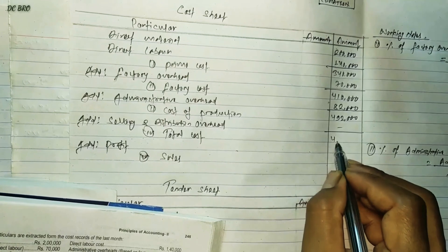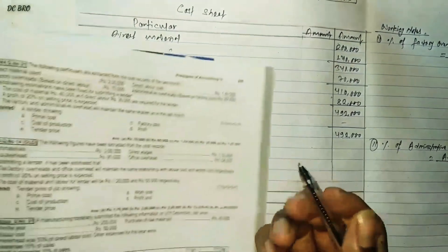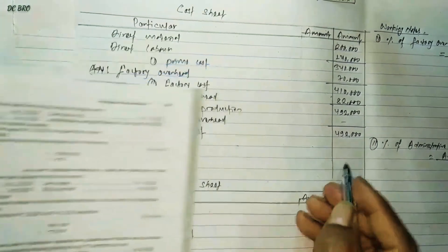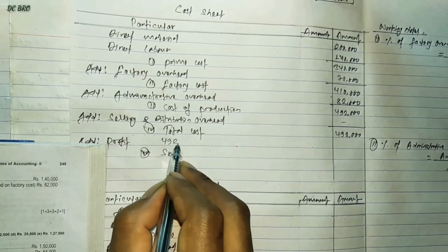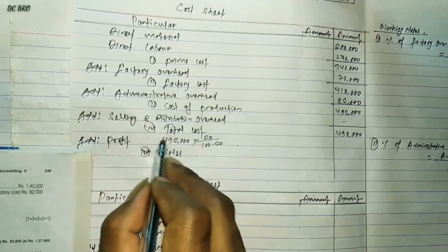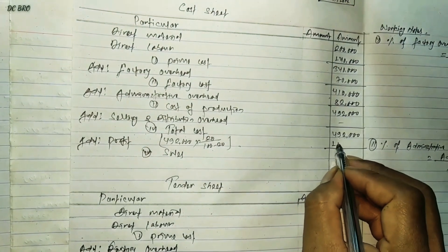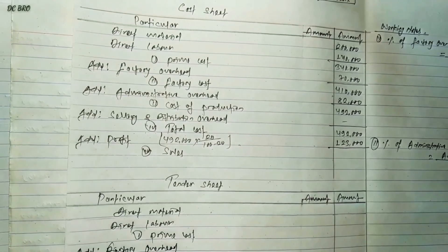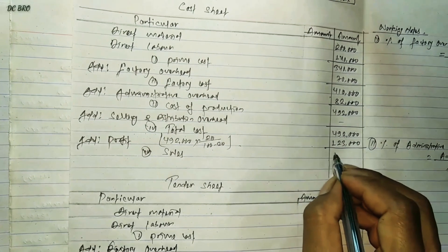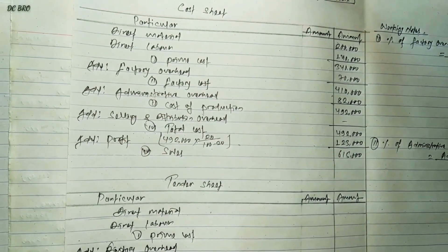Total cost is $1,900,000. Profit is $8,300,000. So $8,300,000 plus $6,500,000 gives $6,300,000 on your tender sheet.